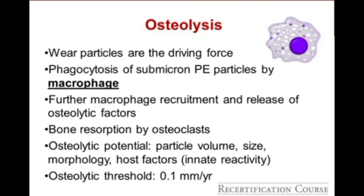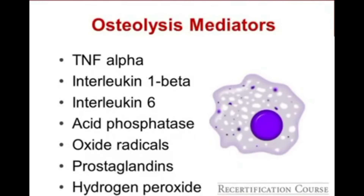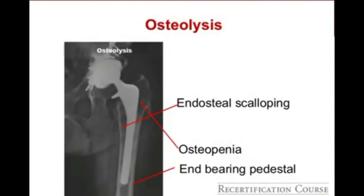Osteolytic potential depends on particle volume, size, and host factors. There is a so-called osteolytic threshold of 0.1mm of wear per year — below that amount, osteolysis is unlikely. Osteolysis mediators include TNF-alpha, IL-6, and others. On X-ray, osteolysis shows proximal osteopenia as with stress shielding, but also endosteal scalloping and a ballooning osteolytic pattern — different from stress shielding bone loss. An end-bearing pedestal can indicate loosening of the implant.